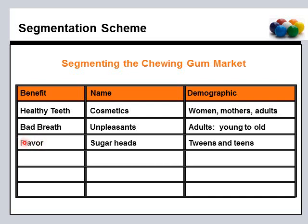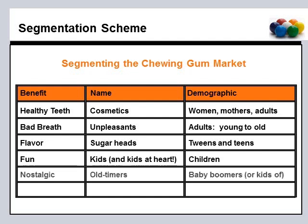The third segment is the benefit of flavor, and I named that group 'sugarheads.' The demographic would be tweens — those not yet but close to becoming teenagers — and teenagers themselves. The fourth segment is the fun benefit, my favorite. The name is 'kids and kids at heart,' and the demographic is children. The fifth is the nostalgic benefit; I named that segment 'the old timers,' with a demographic of baby boomers or kids of baby boomers. The sixth and last segment is the medicinal benefit — I named that group 'specialty shoppers,' with a demographic of those seeking specialty gum, such as smokers or people with dry mouth.